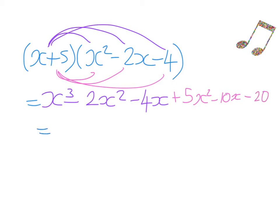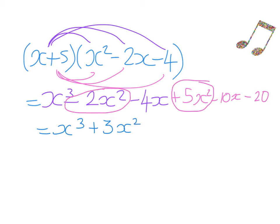Now we gather together the like terms. We've just got one x cubed. For the x squared terms, we have negative 2x squared and positive 5x squared — starting at negative 2 and adding 5 gives positive 3, so plus 3x squared. For the x terms, we have negative 4x take away another 10x — starting at negative 4 on the number line and taking away 10 gives negative 14x.